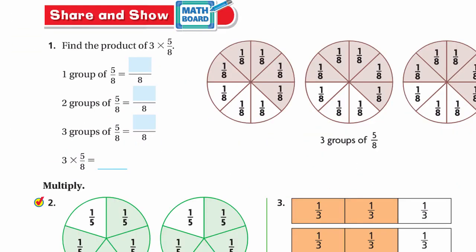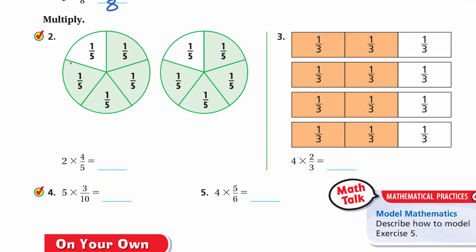For share and show: find the product of 3 multiplied by five-eighths. One group of five-eighths is five-eighths; two groups is ten-eighths; three groups of five-eighths is fifteen-eighths. So 3 × five-eighths = fifteen-eighths. Without the model, just multiply 3 by 5 to get 15 over 8. Next: 2 multiplied by four-fifths. Model four-fifths twice, total is eight-fifths. Or multiply 2 by 4 for 8 over 5. Number 3: 4 multiplied by two-thirds gives eight-thirds, or just 4 × 2 = 8 over 3.